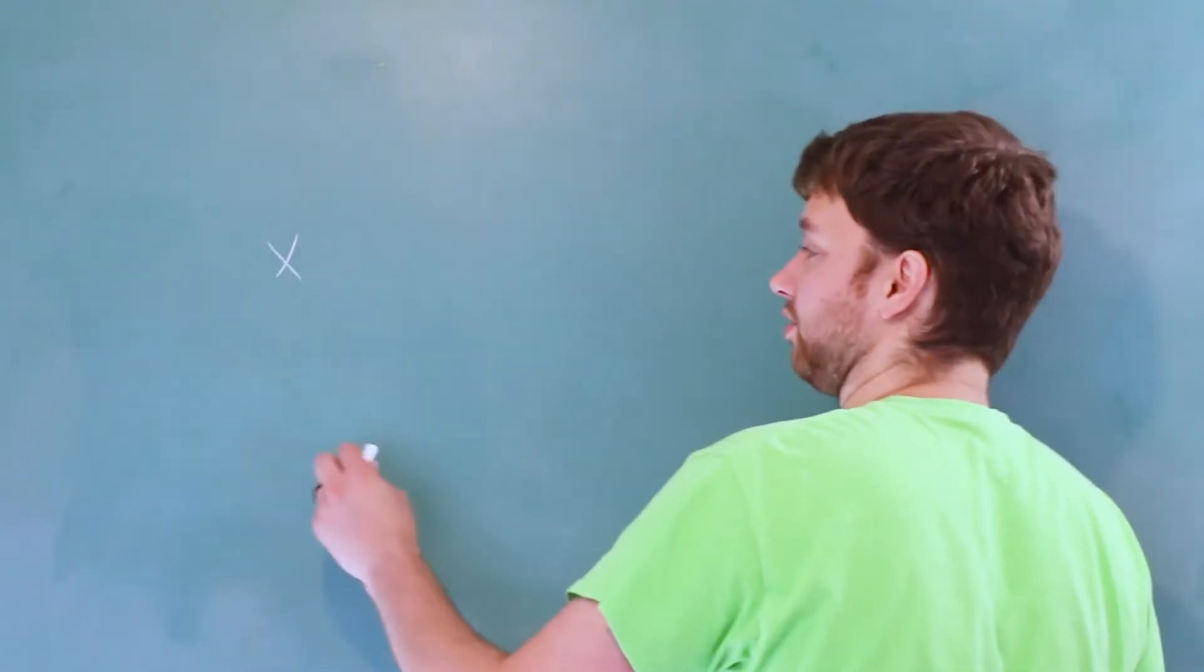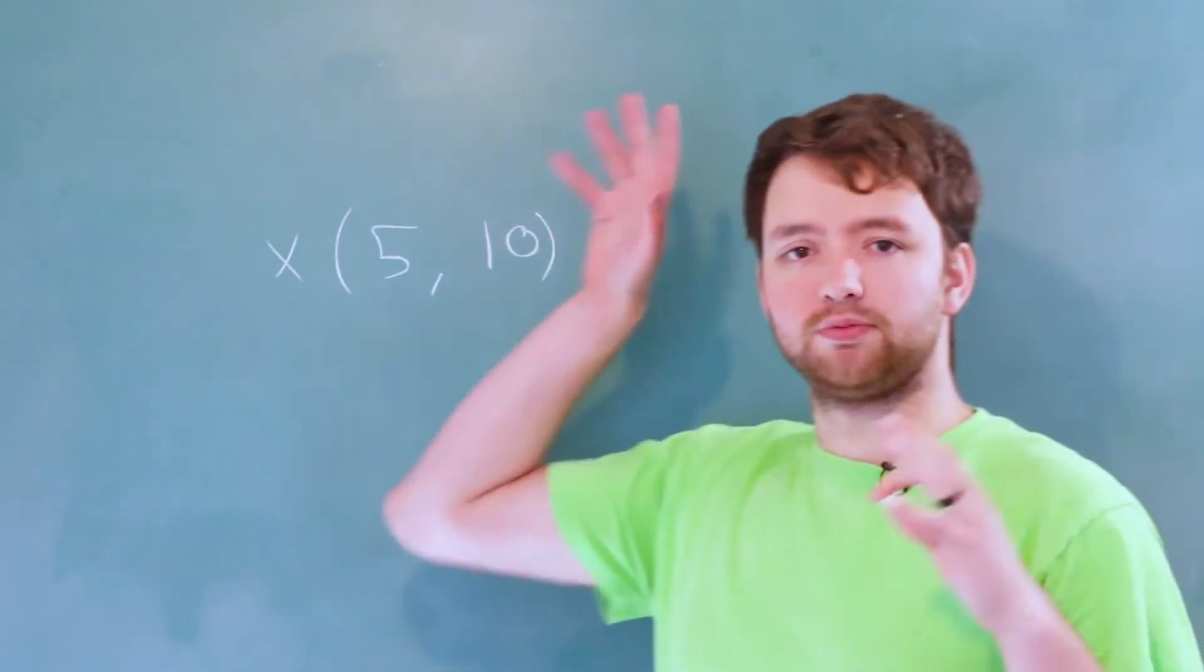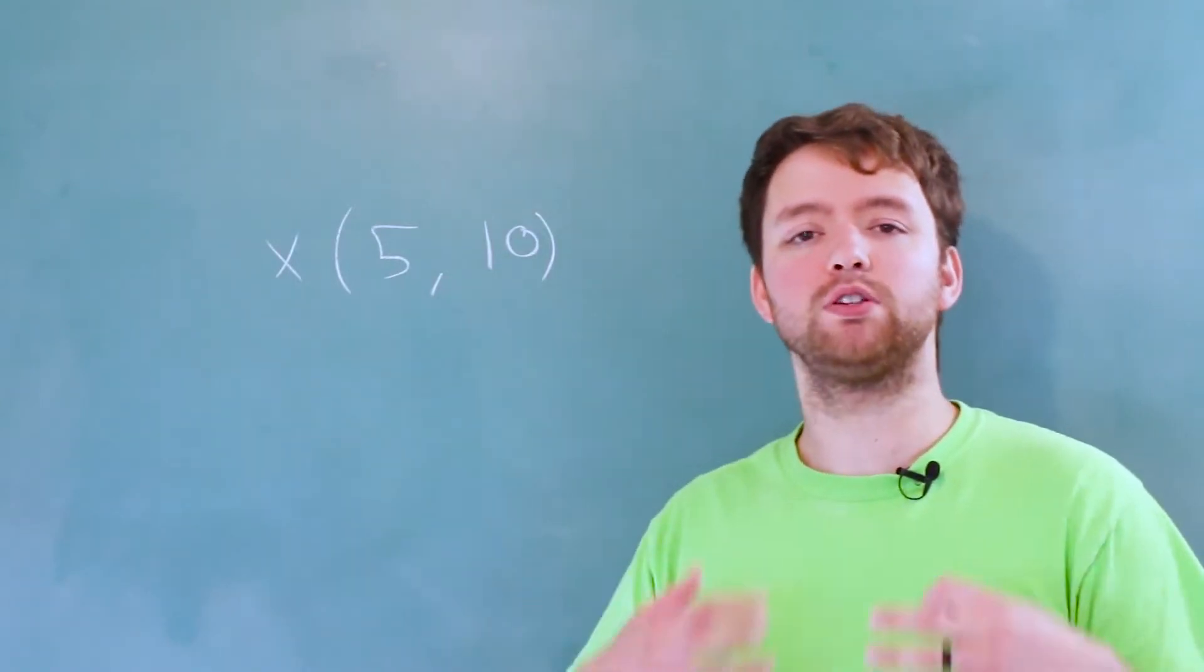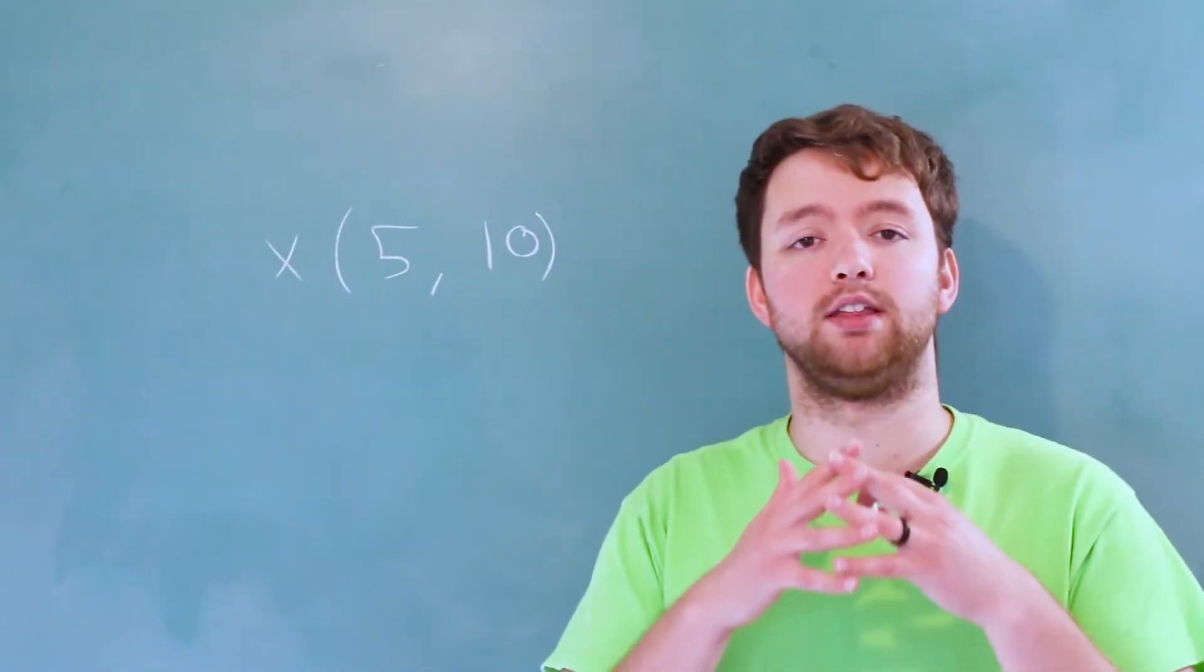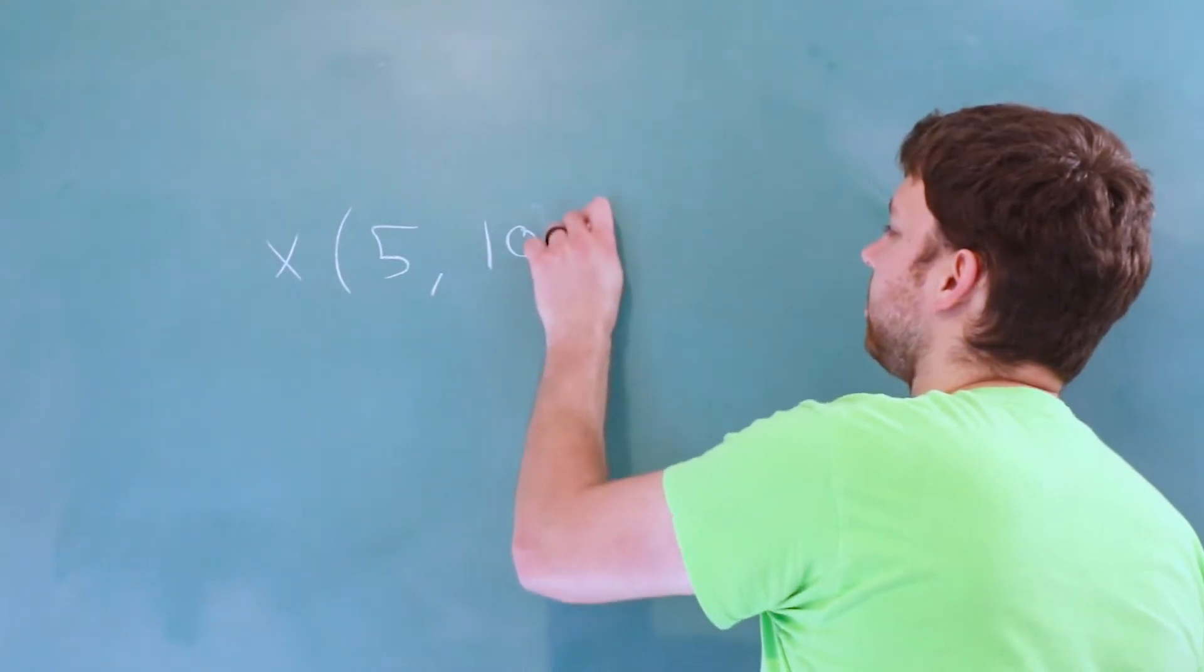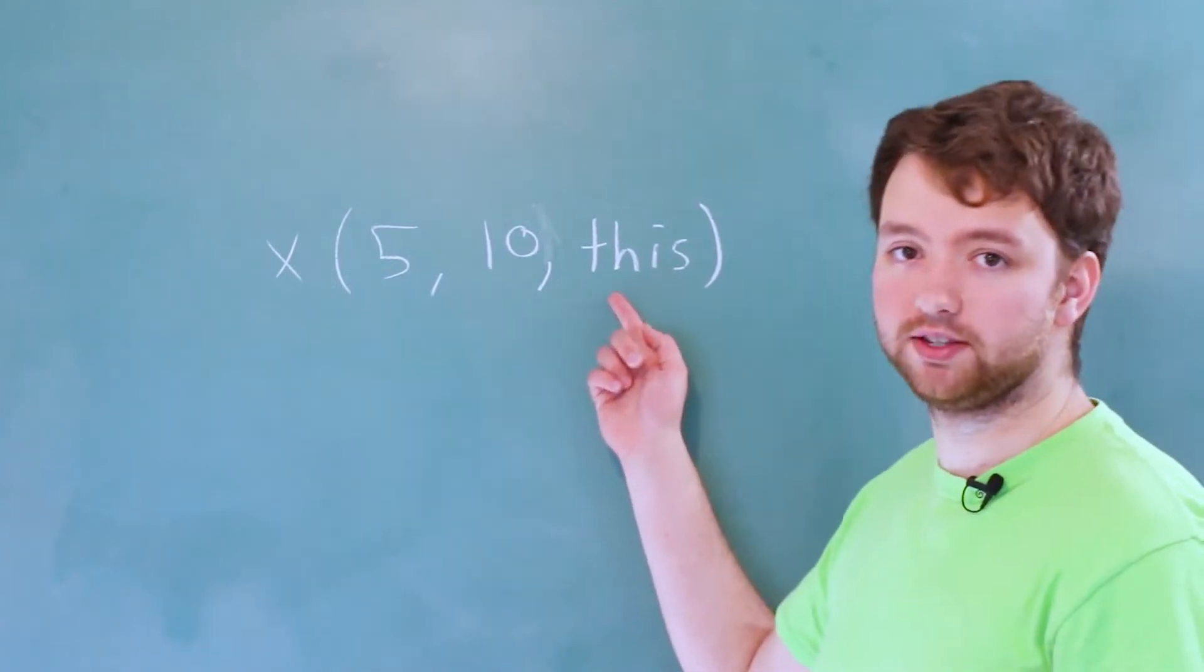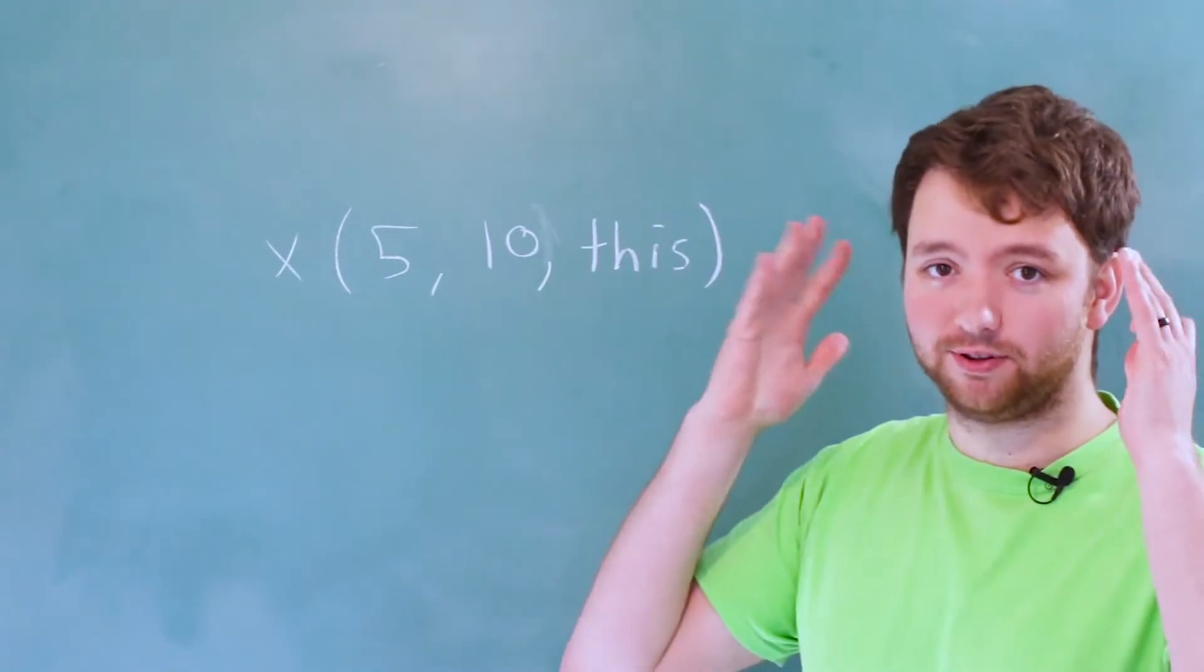So when you have a function and you invoke this function, you pass arguments. For example, if you have a function called X, we might pass in the values 5 and 10. And these are explicit arguments. We're typing them out manually with our hands. There's also implicit arguments where we don't type them out. And one of these is the this argument. So you can kind of think of it as an invisible argument passed in right here called this, but you don't actually type it. This is just how you can imagine it with your brain.